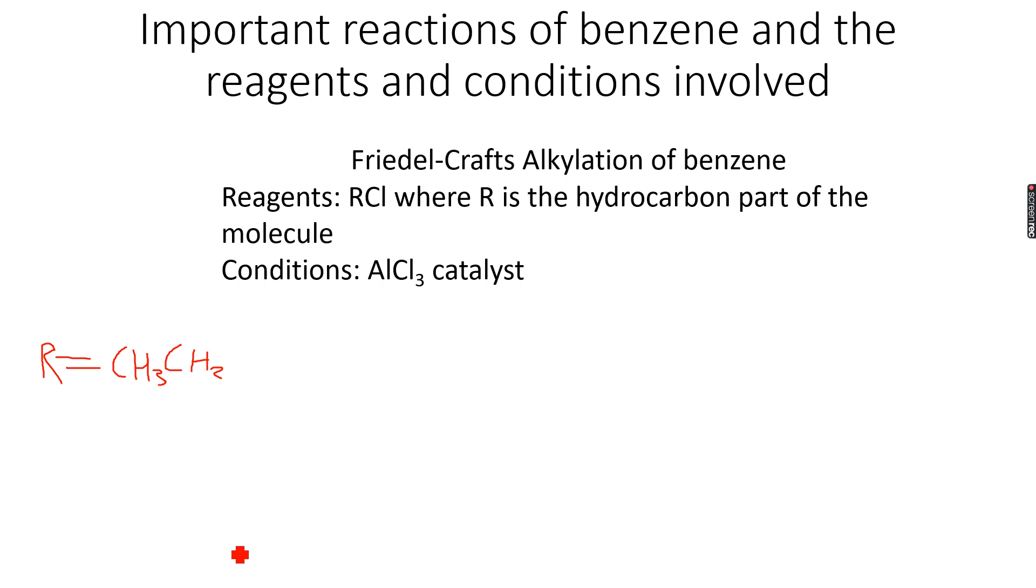This is our ethyl group. So when we have RCl, this becomes CH3CH2Cl - chloroethane. And we use chloroethane if I want to add this ethyl group to my benzene ring. So first you can see that here we have an AlCl3 catalyst.